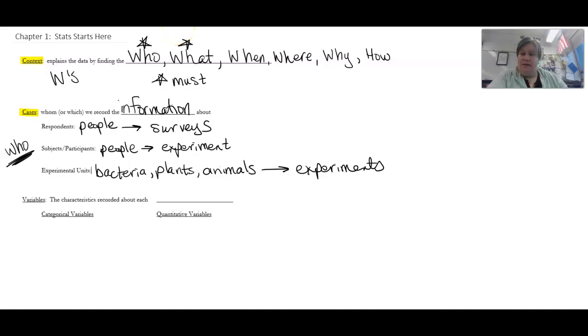Okay, the next thing we have is a variable. And variables are the what's. This is the characteristic that's recorded about each case. So at the beginning of the year, we do a survey, and I ask you, I think I ask you what gender you prefer. I ask you what your GPA is. I ask you what your height is, maybe what your shoe size is, what kind of phone you use. Those are all variables. I collect all this information about you, and everything that I collect about you is a variable.